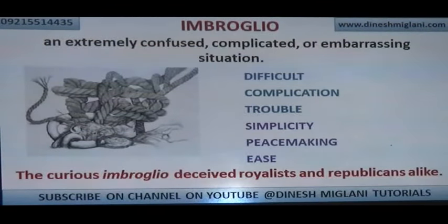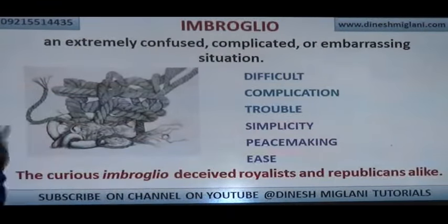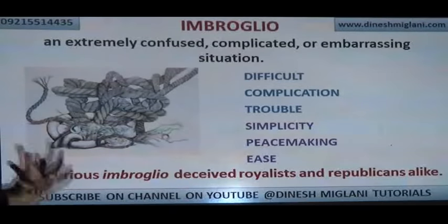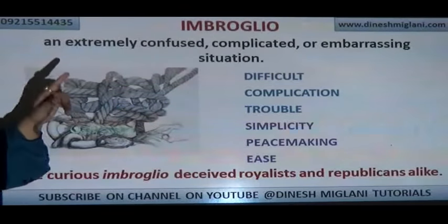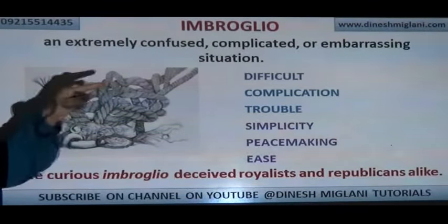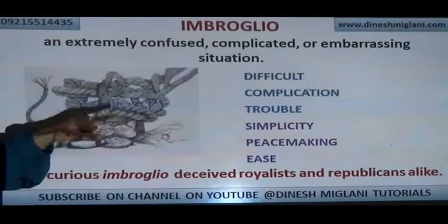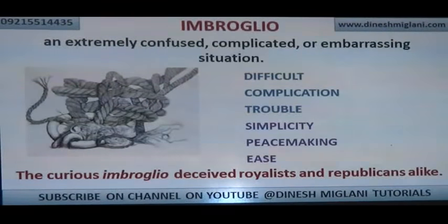Imbroglio — like a complex knot you can't untangle. You won't be able to open it; you'll get very confused and perplexed because the situation is very complex. Imbroglio is a confusing, complicated, or embarrassing situation — it can also mean something that annoys. Synonyms: difficult complication, trouble. Antonyms: simplicity, peacemaking. Example: 'The curious imbroglio deceived royalists and republicans alike.'